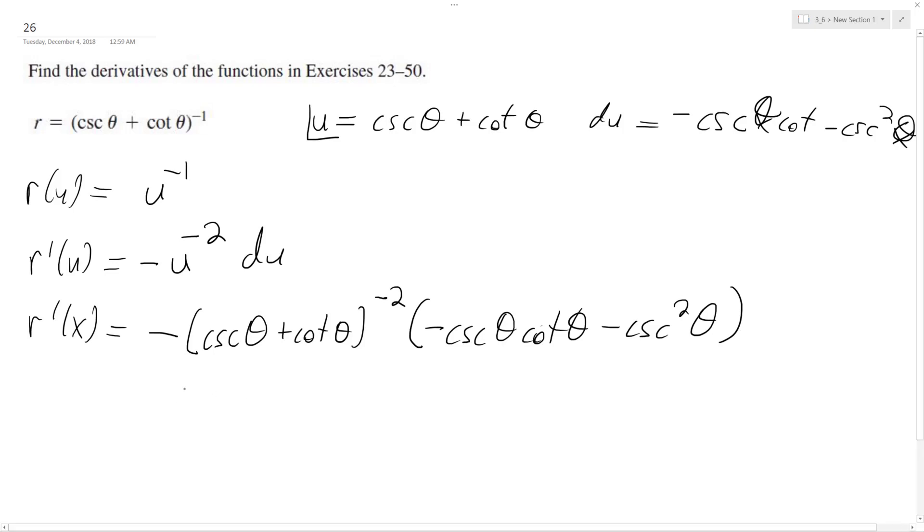So what we can do here is factor out a negative cosecant theta. What we get is cotangent theta plus cosecant theta in the numerator, and this is over negative (cosecant theta plus cotangent theta), because the original was squared.